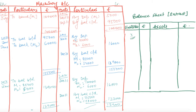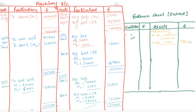In the balance sheet, we show the machinery as follows. As on 31st December 2015: Machinery = ₹1,00,000, minus depreciation of ₹5,000, giving a net balance of ₹95,000 shown in the outer column.